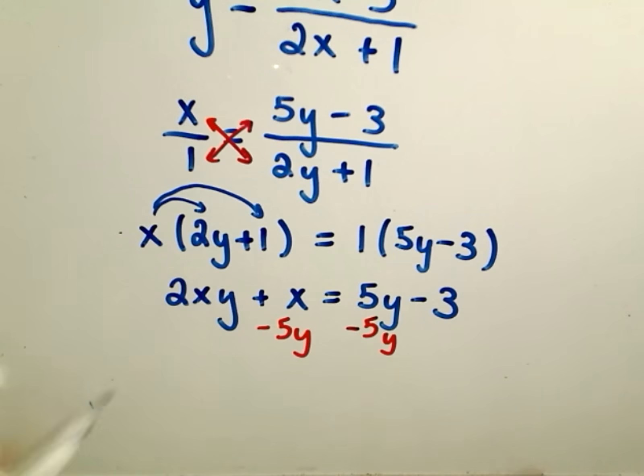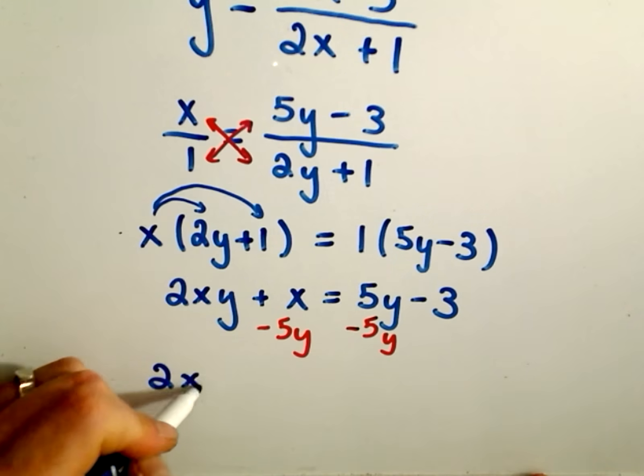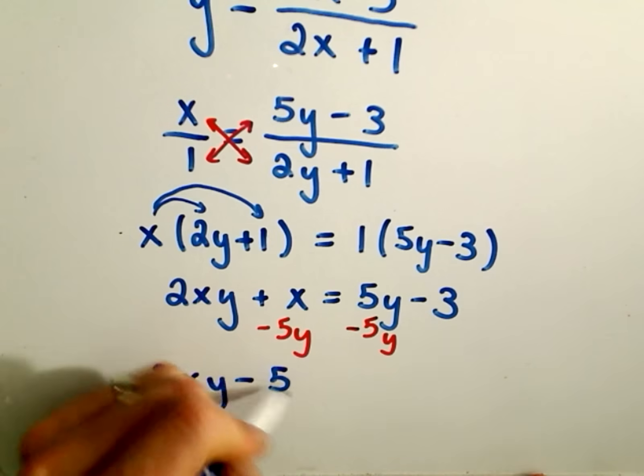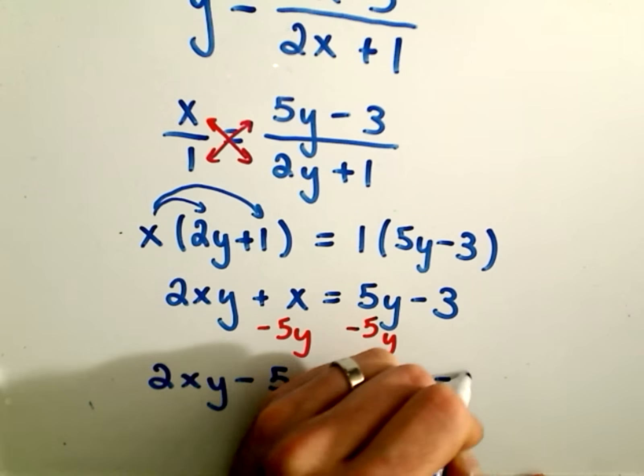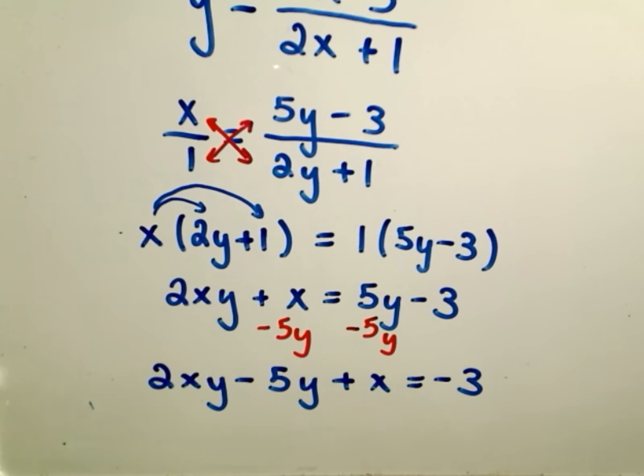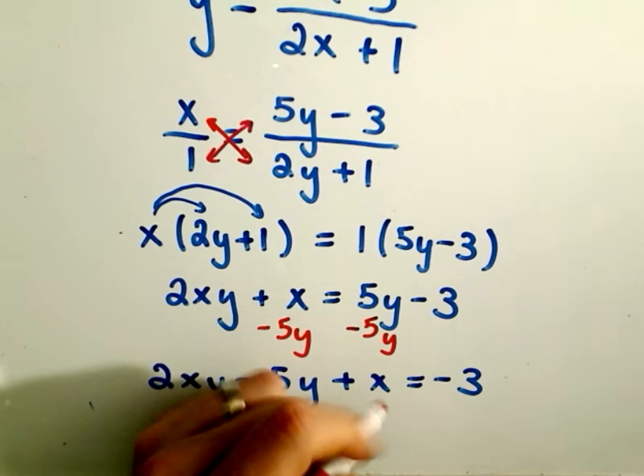So on the left side, we'll be left with 2xy minus 5y plus x equals negative 3. But then I'm going to do the same thing to get rid of the positive x. I'm simply going to subtract it from both sides.